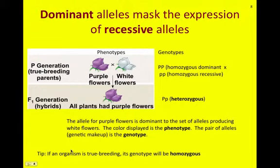Here's a tip: if an organism is true breeding — so in a problem or discussion, if they note that the organism is true breeding — that means its genotype must be homozygous. You can work that out on your own to see why that is true.